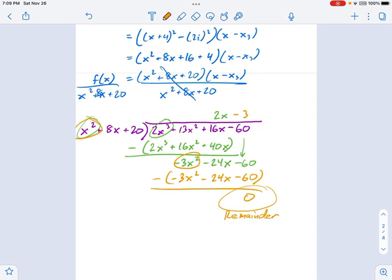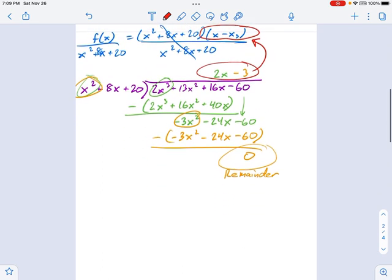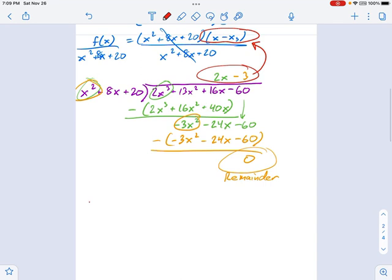Which means 2x minus 3 is our last factor. So let's write this thing in full factored form now. f of x equals the irreducible quadratic that we found using the conjugate root theorem, and then this latest factor that we found using long division.